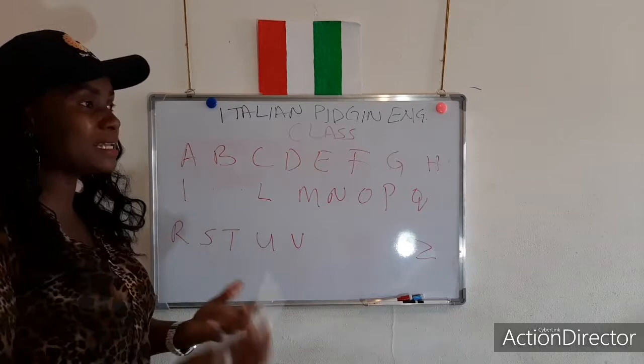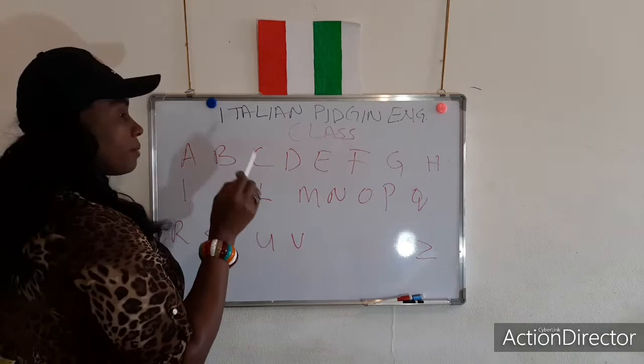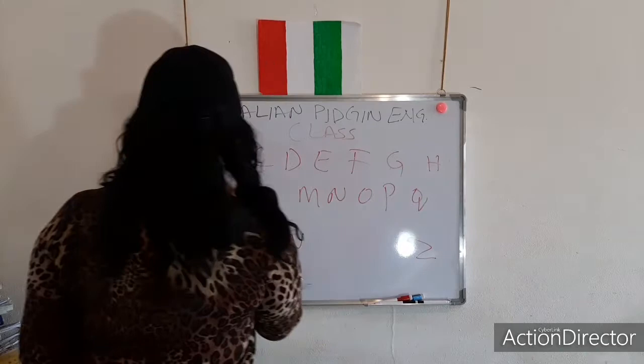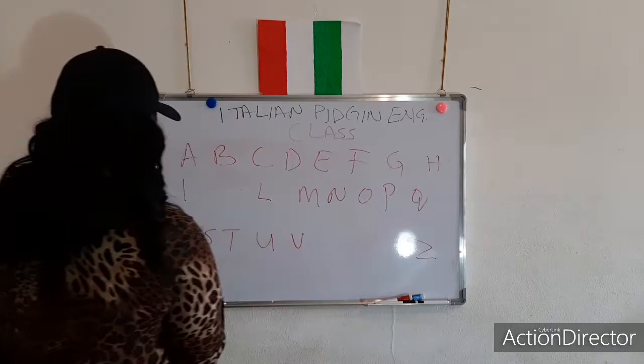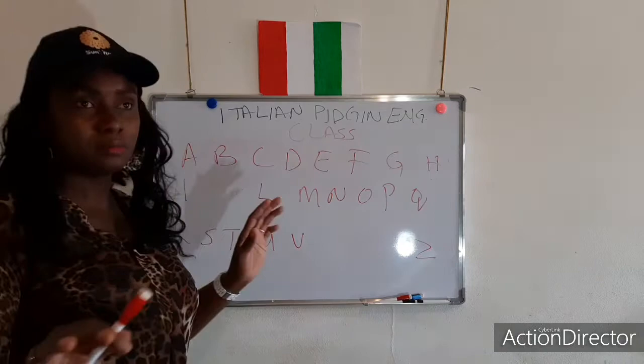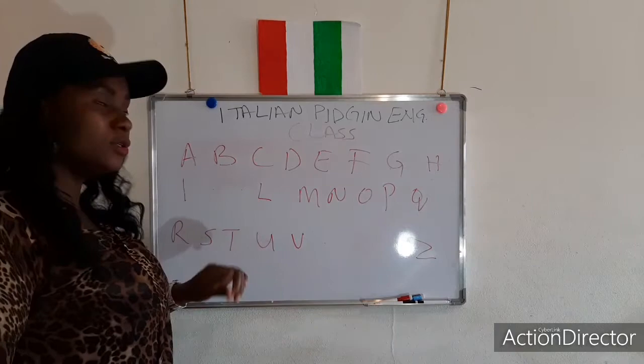If you look here now, you can see that this alphabet has twenty-one letters. Twenty-one. Now you know — complete.